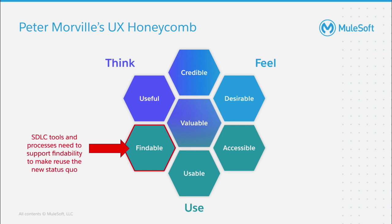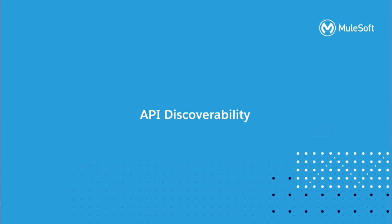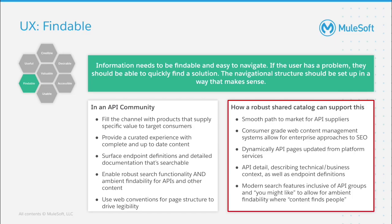We will focus primarily on findability or discoverability in this video. The APIs and other API assets need to be findable and easy to navigate. The navigation and categorization structure should make sense. Exchange is a robust shared catalog with features like categories, tags, and advanced search, providing a very ambient findability experience.